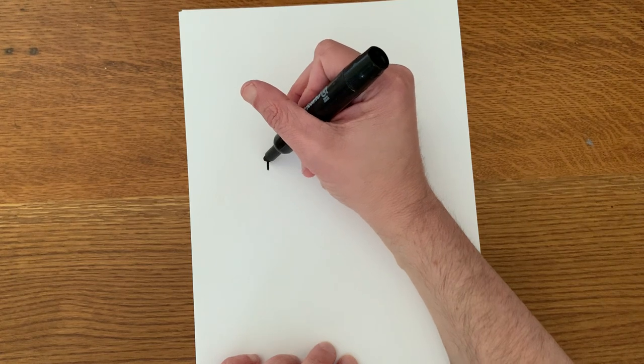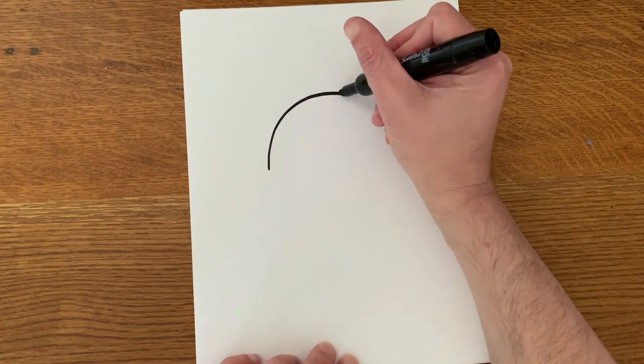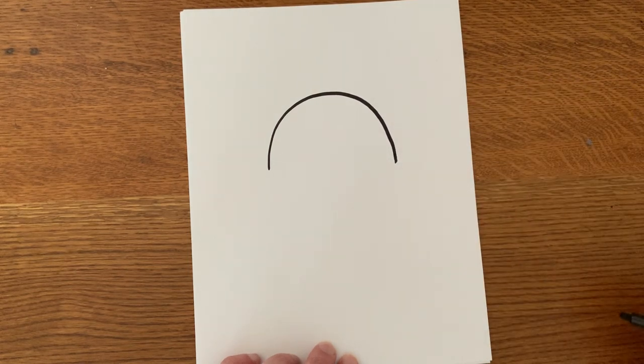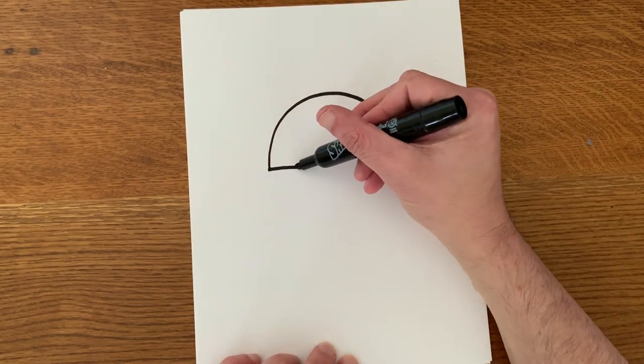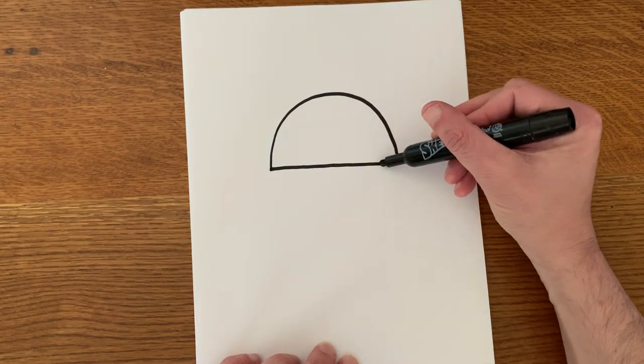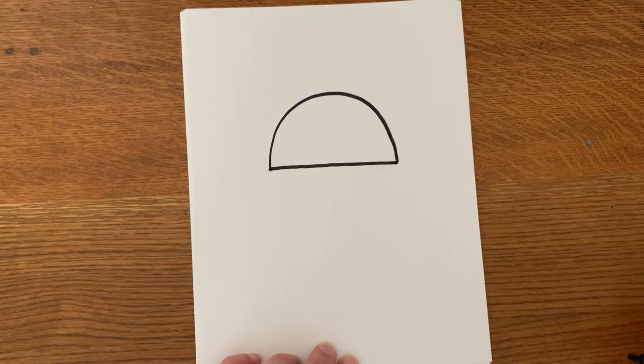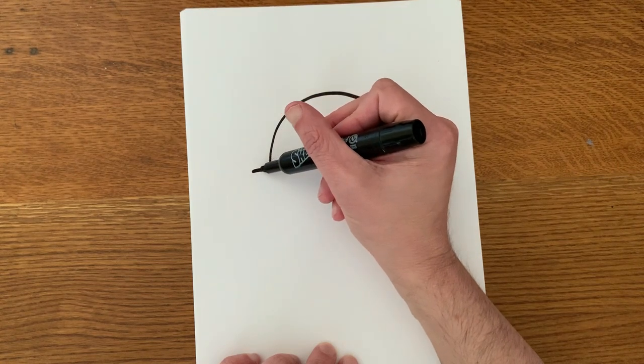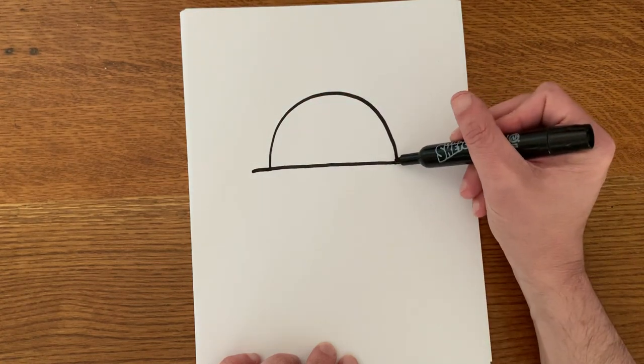All right, towards the top of the paper, I'm going to draw an arc like a rainbow. And then I'm going to connect the two ends of the rainbow like this. Now just beyond that line, I'm going to extend it a little bit further on each side.